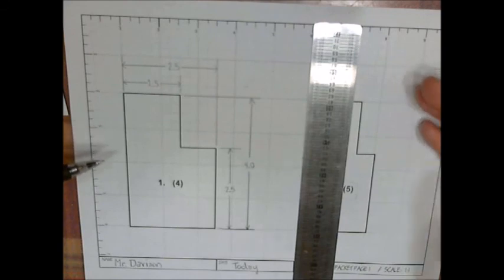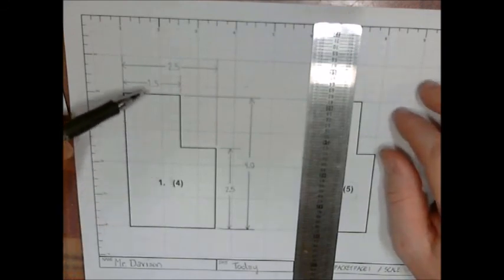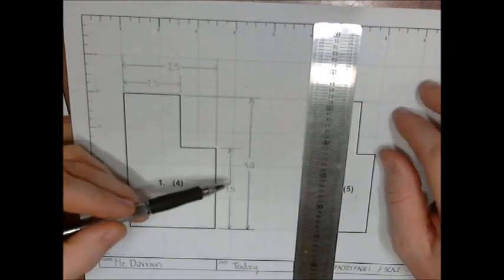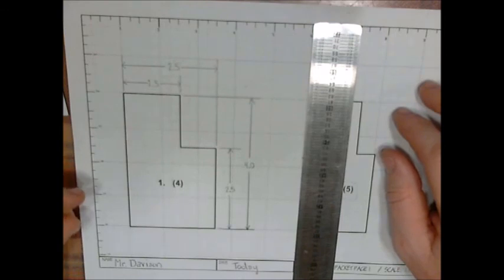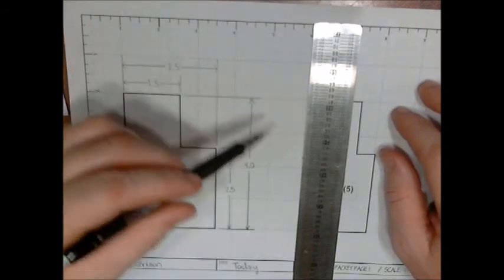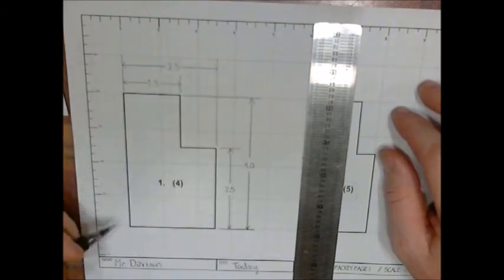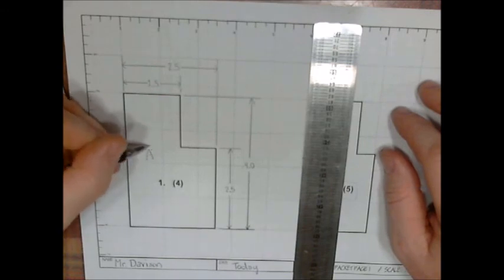This is correctly dimensioned and you can tell this number four counts for one, two, three, four dimensions. If your object looks just like this, you get an A.